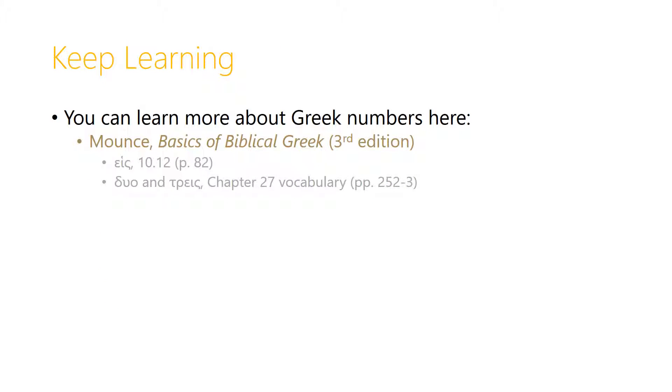You can learn more about Greek numbers in Mounce's Basics of Biblical Greek 3rd edition. He really only says very much about the first three numbers, but I've given you the sections and page numbers for the 3rd edition there.